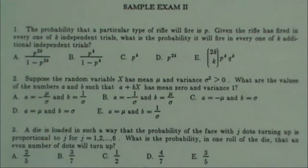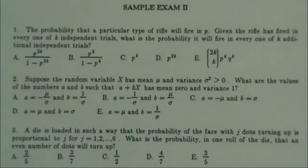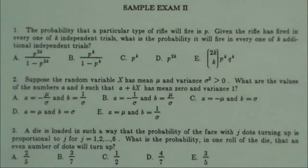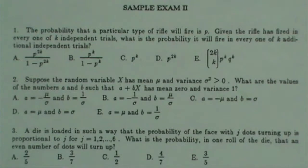Number two: suppose the random variable X has a mean mu and a variance sigma squared. What are the values of the numbers A and B such that A plus B times X has a mean of zero and variance of one?